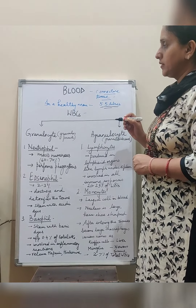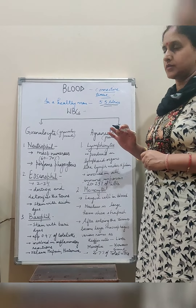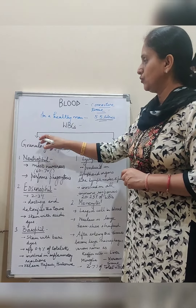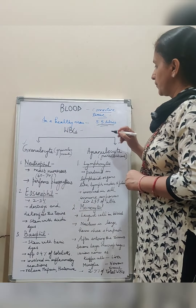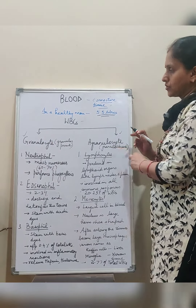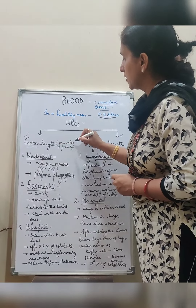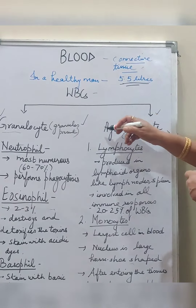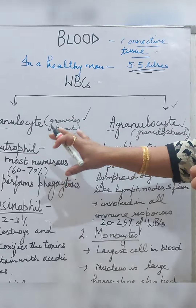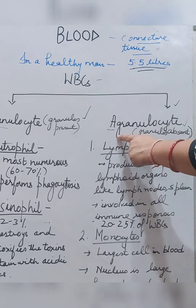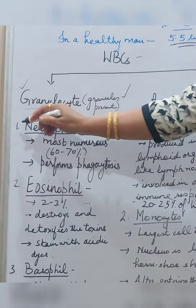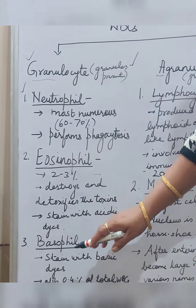White blood cells, also called leukocytes, can be divided into two: granulocytes and agranulocytes. Granulocytes are further divided into three categories: neutrophils, eosinophils, and basophils. Neutrophils do not take up either acidic or basic stain — that is why they are called neutrophils. They are the most numerous WBCs, comprising 60 to 70%, and perform phagocytosis wherever infection occurs.